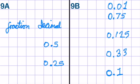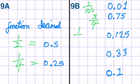I'd like you to write the fraction equivalent for each decimal. Press pause, and then have a go. So, 0.5 is half. 0.25 is quarter. 0.01 is one hundredth. 0.75 is three quarters. 0.125 is one eighth. 0.33 is one third. And 0.1 is one tenth.